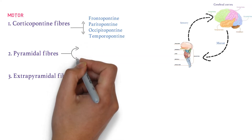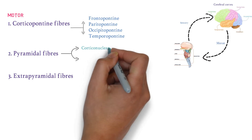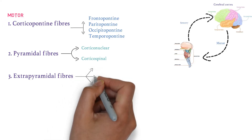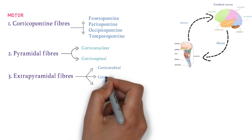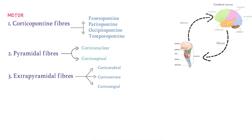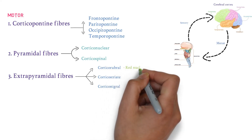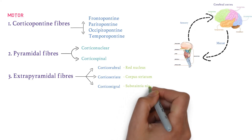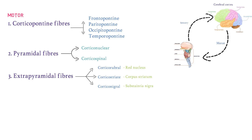The second type of motor fibers are pyramidal fibers, which include corticonuclear fibers (cortex to brainstem, also called bulbar nuclear fibers) and corticospinal fibers (cortex to spinal cord). The third type is extrapyramidal fibers, comprising corticorubral fibers to the red nucleus in the midbrain, corticostriatal fibers to the corpus striatum, and corticonigral fibers to the substantia nigra.